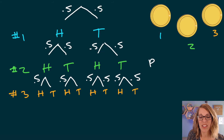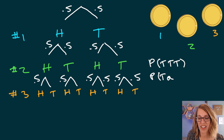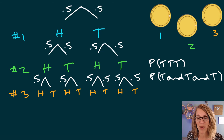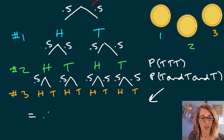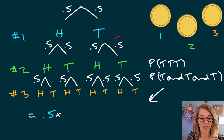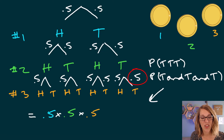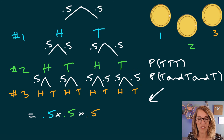Let's say I want the probability of getting all three tails. That's P(tails and tails and tails), so I multiply those probabilities together: the probability of the first tail is 0.5, times the probability of the second tail, 0.5, times the probability of the third tail, 0.5. So 0.5 times 0.5 times 0.5 equals 0.125, or 12.5%.